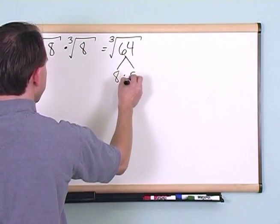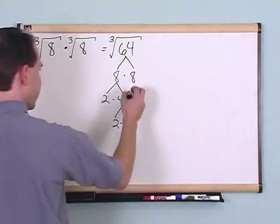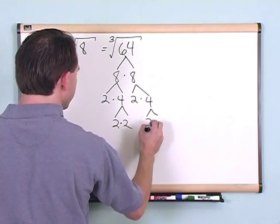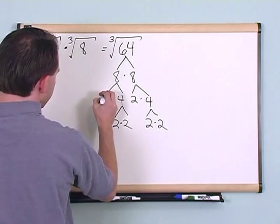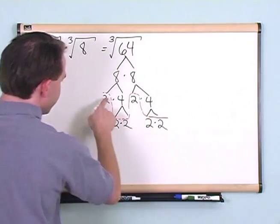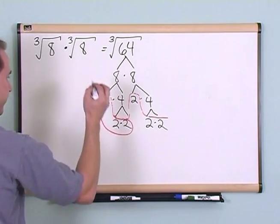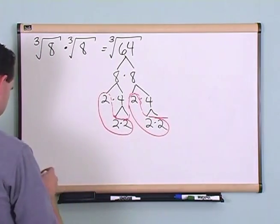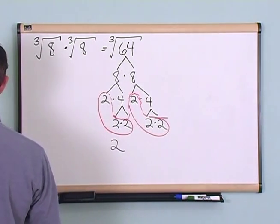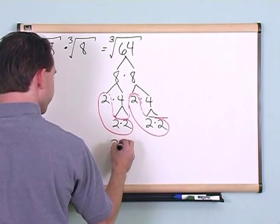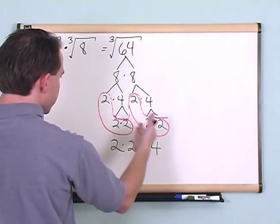64 is 8 times 8. 8 is 2 times 4, and 4 is 2 times 2 — same on both sides of the factor tree. These are cubed roots, so I'm looking for pairs of 3. Here's one pair of 3, and here's another pair of 3. One 2 comes out from the first pair, and another 2 comes out from the second pair. 2 times 2 gives me 4, and there's no radical left over because I've used everything in the tree finding pairs of 3.